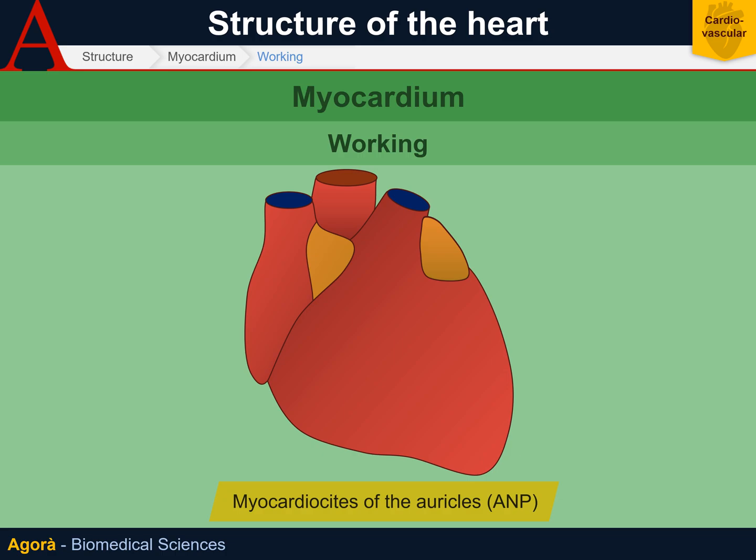This substance is released during the relaxation of the heart caused by a large quantity of blood inflow. The relaxation is perceived by the auricle myocardiocytes, which produce the natriuretic peptide, acting simultaneously as sensor and as response.